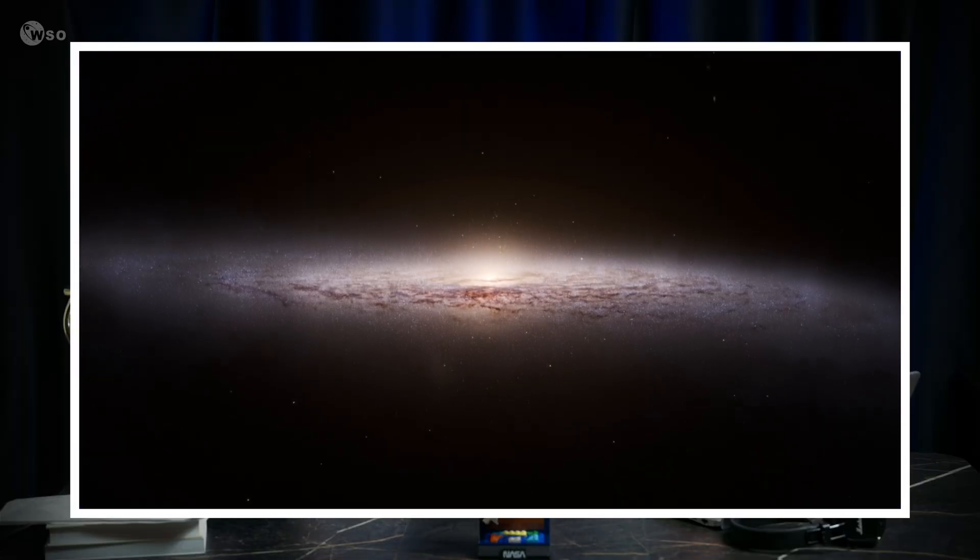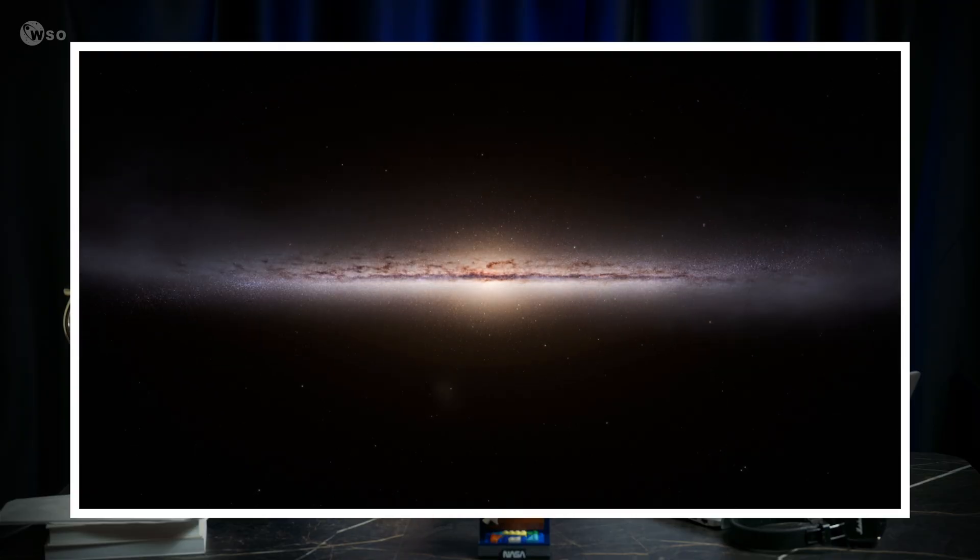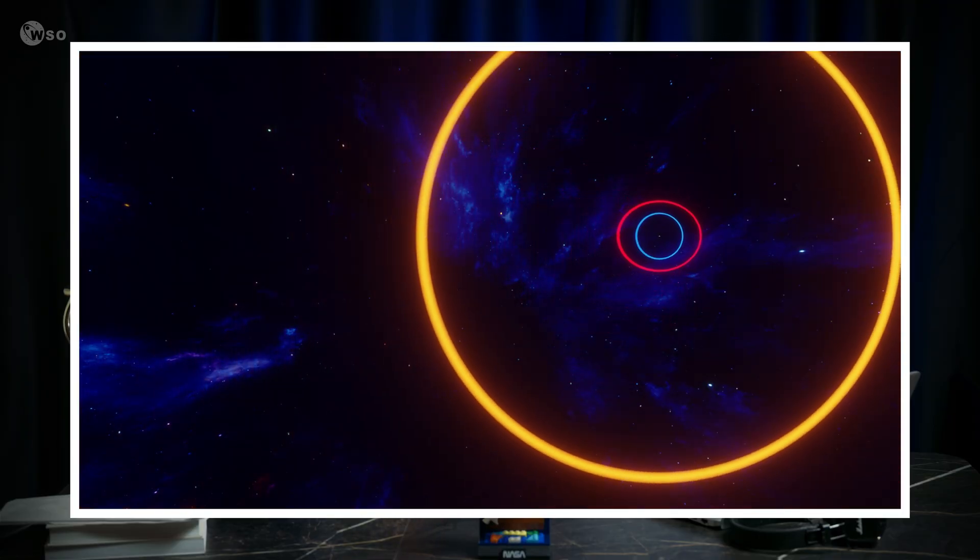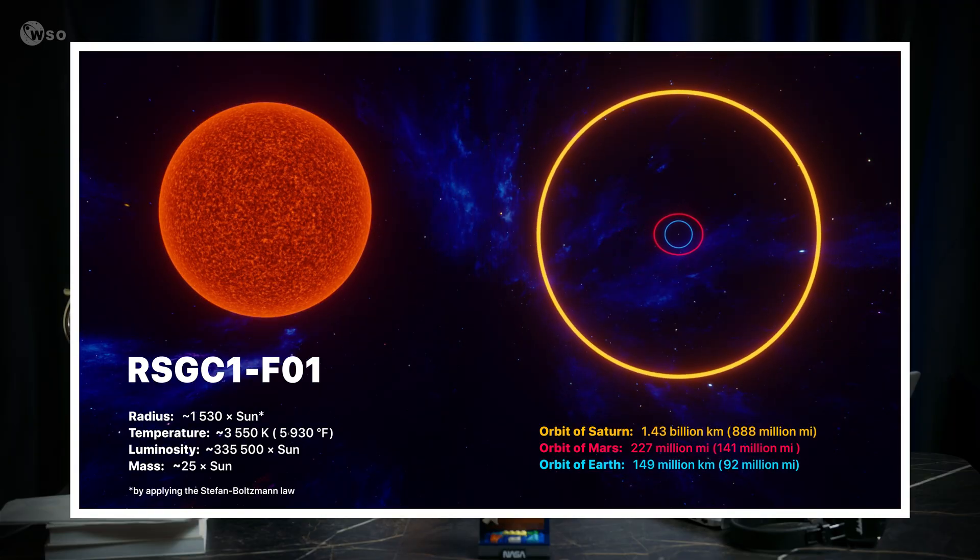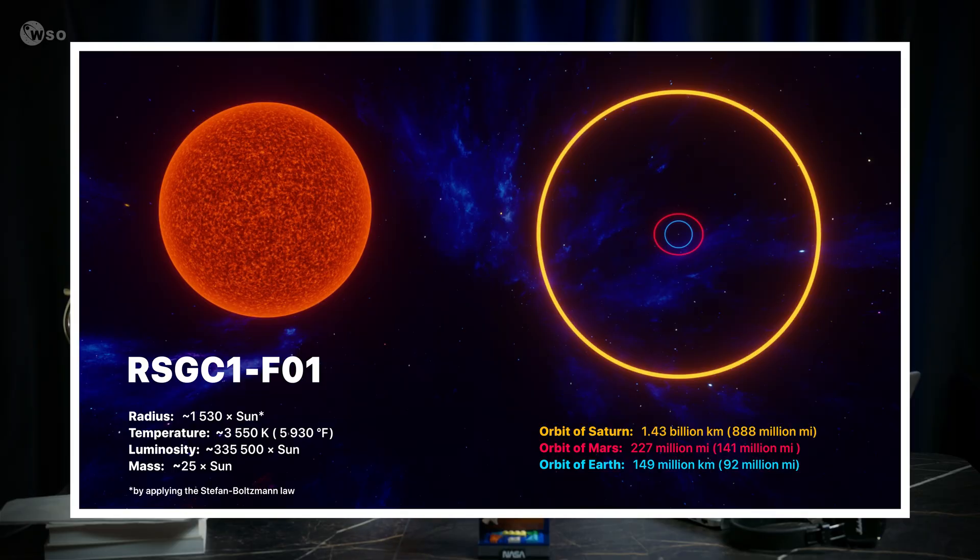Hidden deep in the dusty Scutum-Crux arm of the Milky Way galaxy, this red supergiant is the true monster. Its radius is estimated at 1,530 times the sun's, large enough that if it replaced our sun, its photosphere would reach well past Jupiter and approach Saturn's orbit.